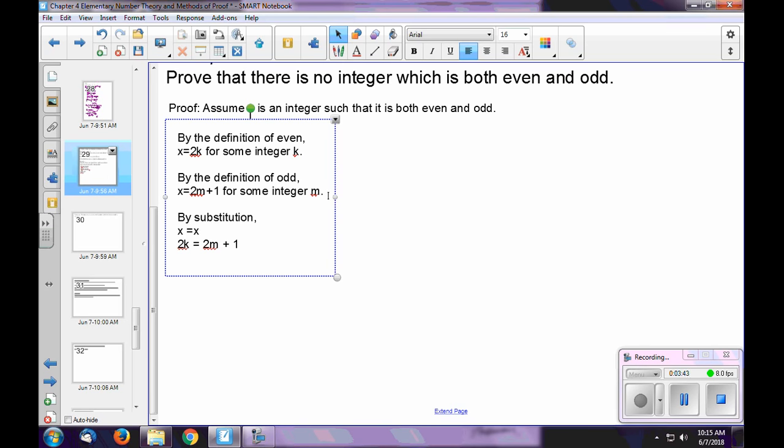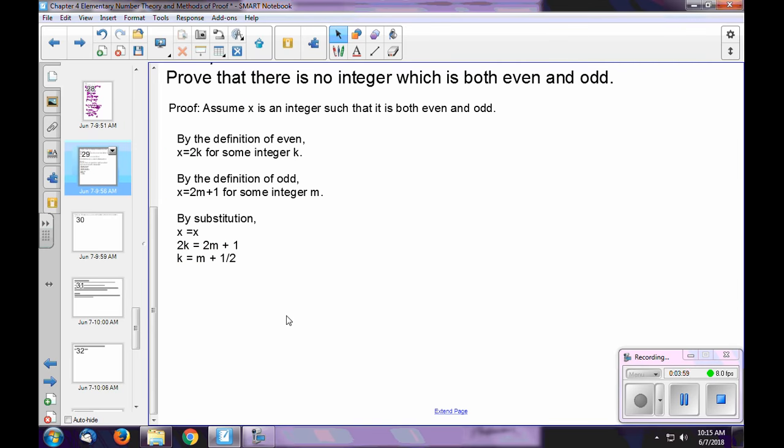So if we have 2k is equal to 2m plus 1, and you divide both sides by 2, let's get k by itself. Remember, k is an integer. We get k is equal to 2m plus 1.5. Now, there's something very, it should be very obvious here. Maybe not when you first practice, but as you go through things. You have to find out what makes this uncomfortable. What's awkward about this? What doesn't feel like it should be right?